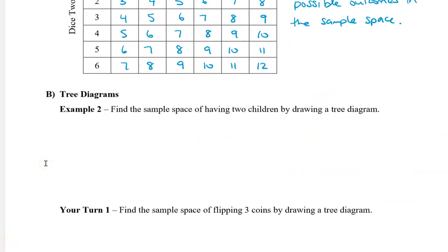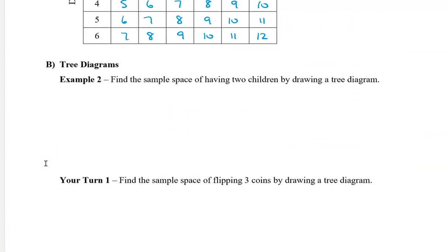Another way to list the sample space is by drawing a tree diagram. For example, let's find the sample space of having two children, whether they're boy or girl, by drawing a tree diagram.